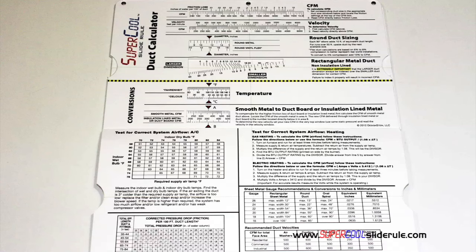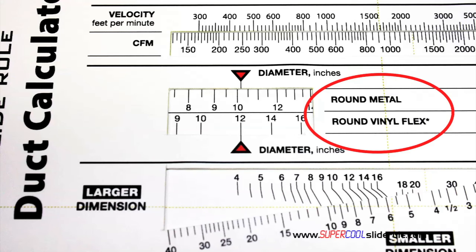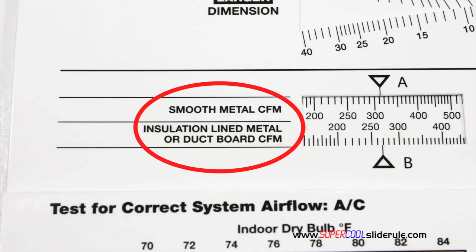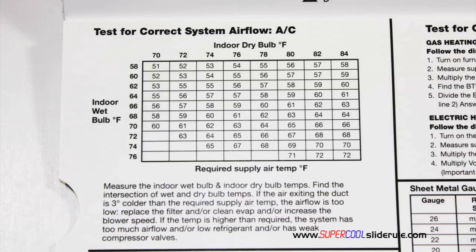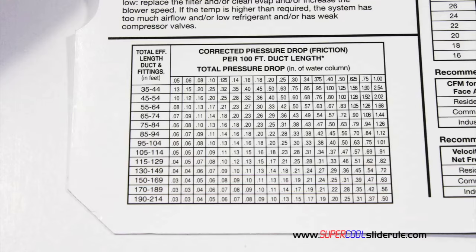Inside is packed with even more information. It performs sizing of both metal and flexible duct. It has the only direct reading conversion from smooth metal to insulation lined metal we've ever seen. The majority of technicians have never been taught that if the insulation is on the inside of the ductwork, you cannot size it with a regular duct calculator. It has step-by-step directions for determining airflow through a gas furnace, electric furnace, or an air conditioning unit. It has pressure drop multipliers for ductwork, as well as recommended velocities.